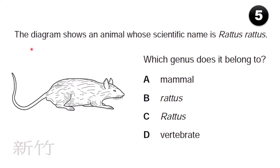The diagram shows an animal whose scientific name is Rattus rattus. Which genus does it belong to? You know that in a binomial name the genus comes first, so the genus is Rattus.